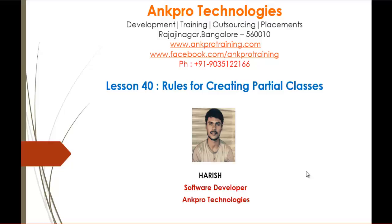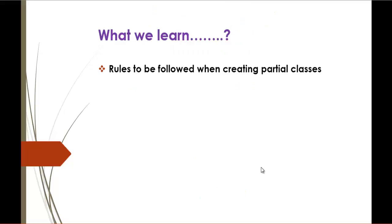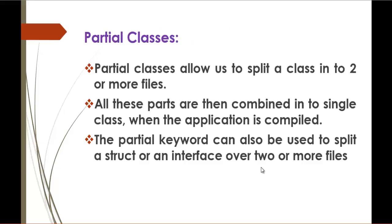Hello, welcome to lesson 40: Rules for Creating Partial Classes in C#, brought to you by Angpro Technologies. My name is Arish. In this session we're going to learn the rules to be followed when creating a partial class. First, let's recall from the previous session: partial classes allow us to split a class into two or more files using the partial keyword. You can also split a struct or interface into two or more files, and at compile time, the compiler combines these files and compiles them as a single unit.